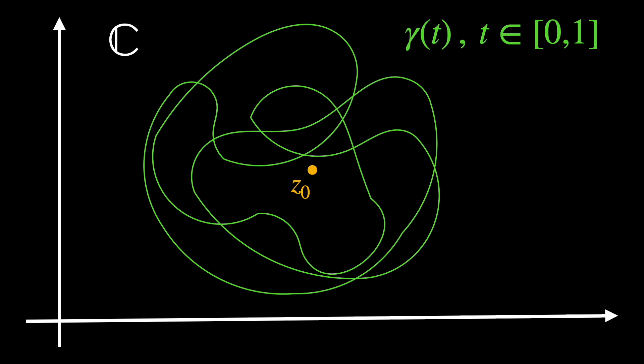If gamma of t is a parametrization of the curve gamma, where t ranges from 0 to 1, then θ(t) represents the angle that the vector from z0 to gamma of t makes with the positive real axis. As gamma of t moves along the curve, θ(t) increases or decreases depending on whether the curve is moving counterclockwise or clockwise around z0.